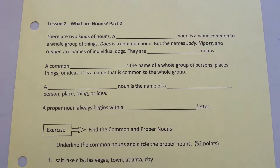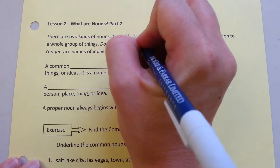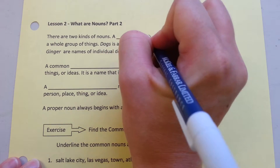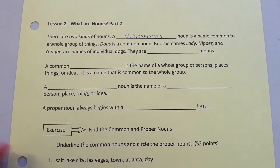Lesson two. What are nouns? Part two. There are two kinds of nouns. A common noun is a common name to the whole group of things.